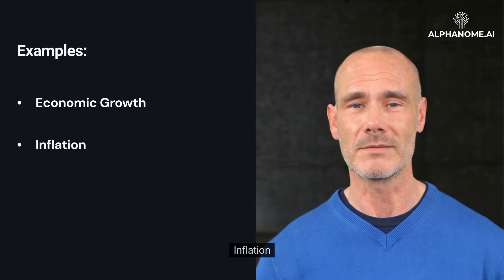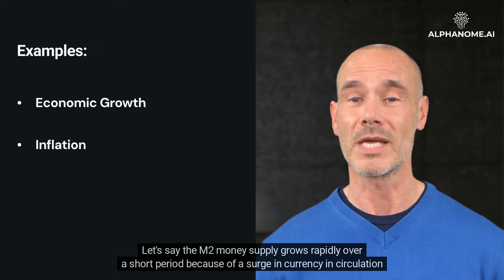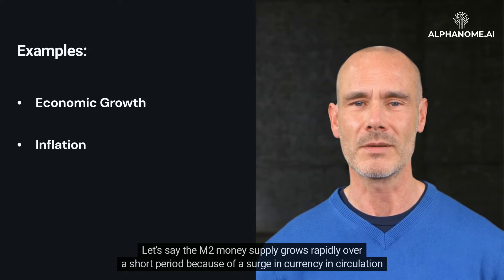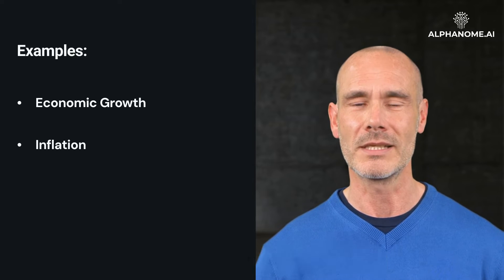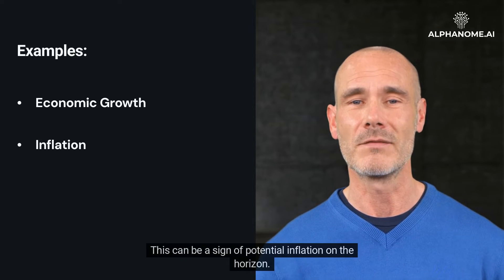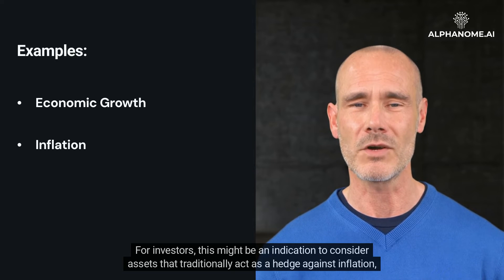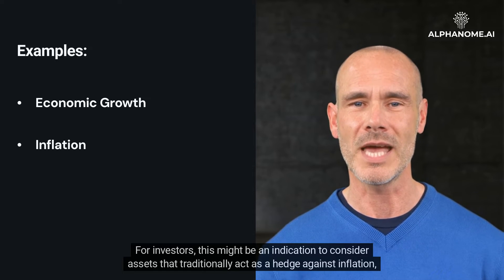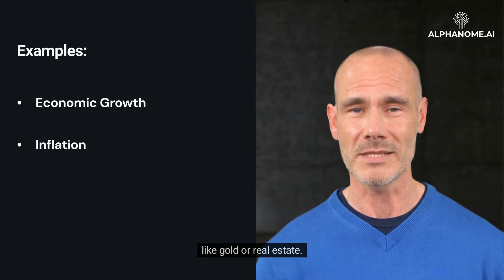Inflation example: if the M2 money supply grows rapidly over a short period because of a surge in currency in circulation and demand deposits, this can be a sign of potential inflation on the horizon. For investors, this might be an indication to consider assets that traditionally act as a hedge against inflation, like gold or real estate.